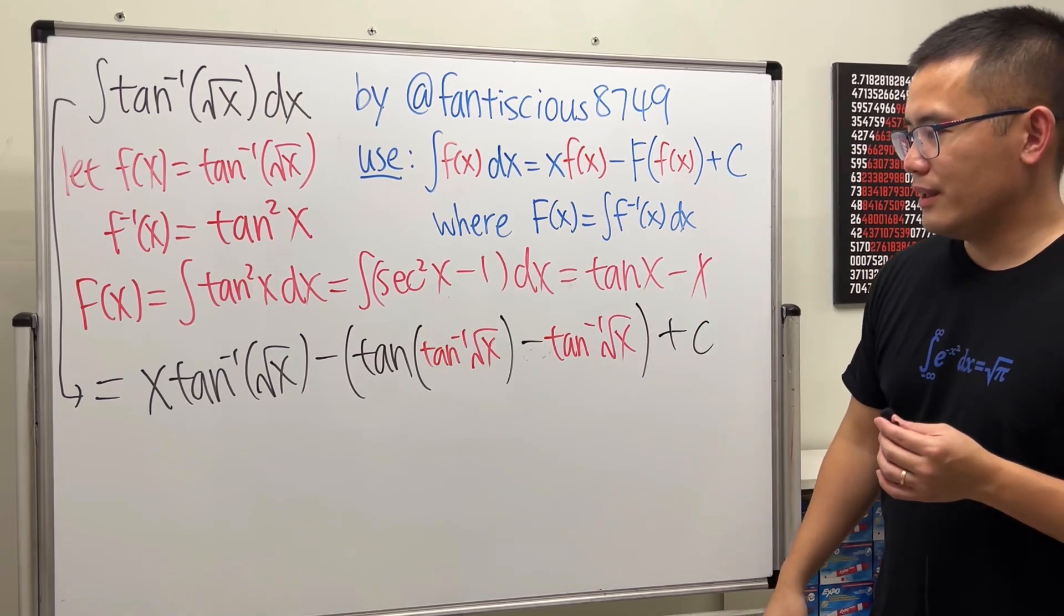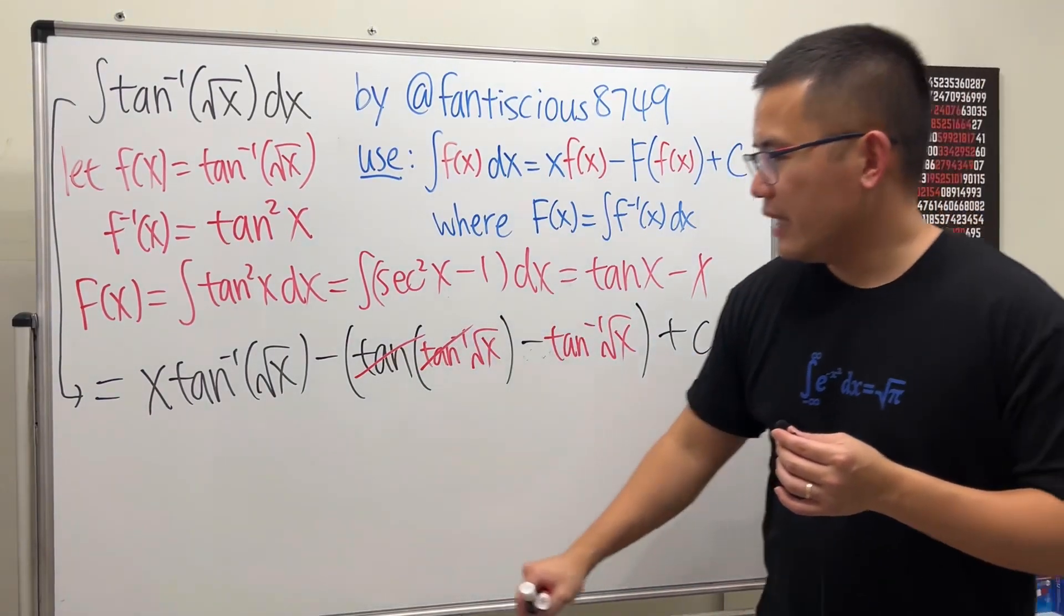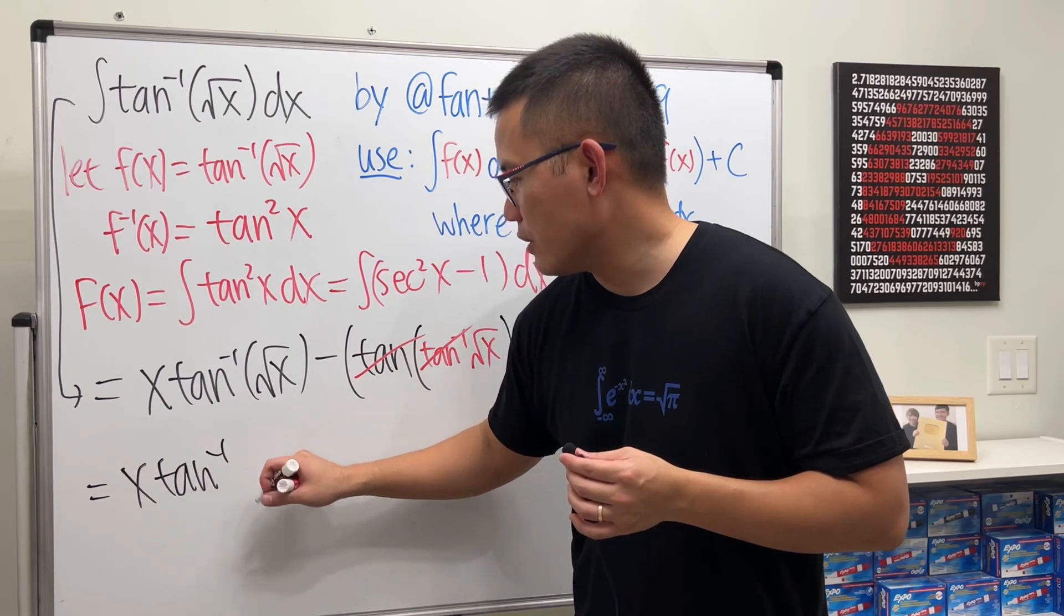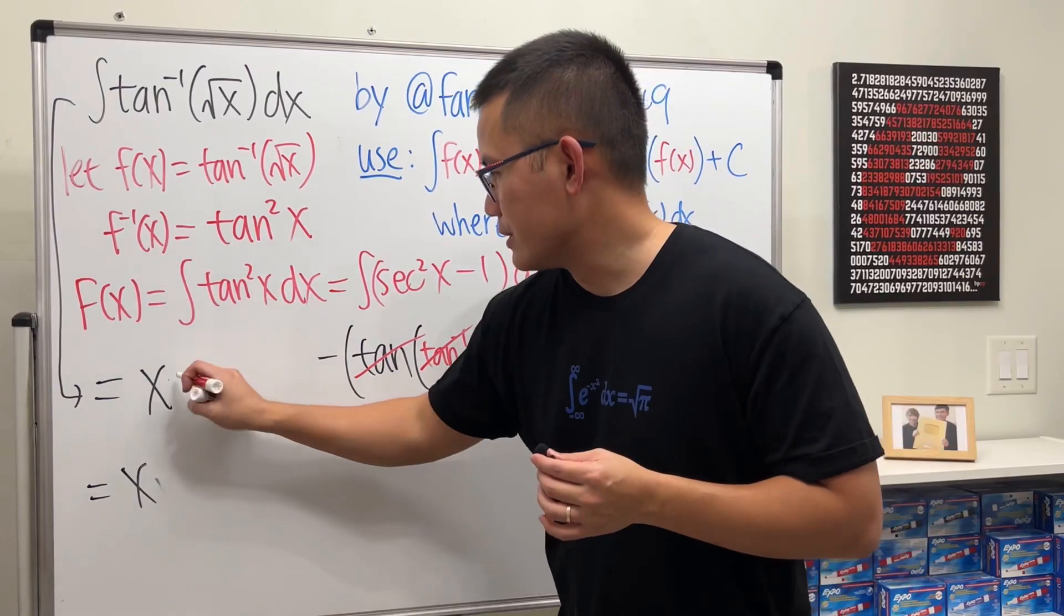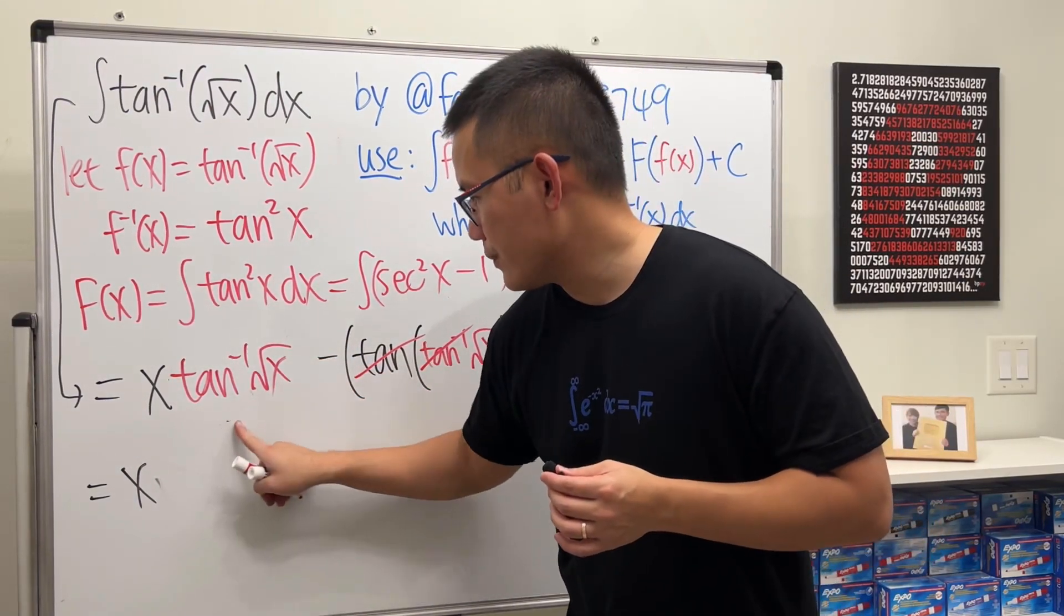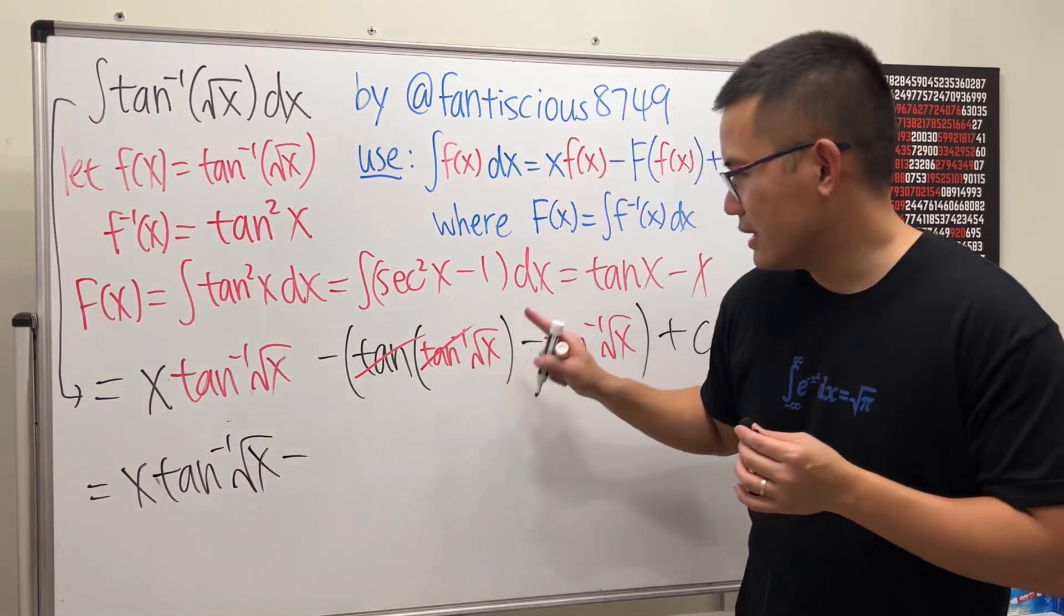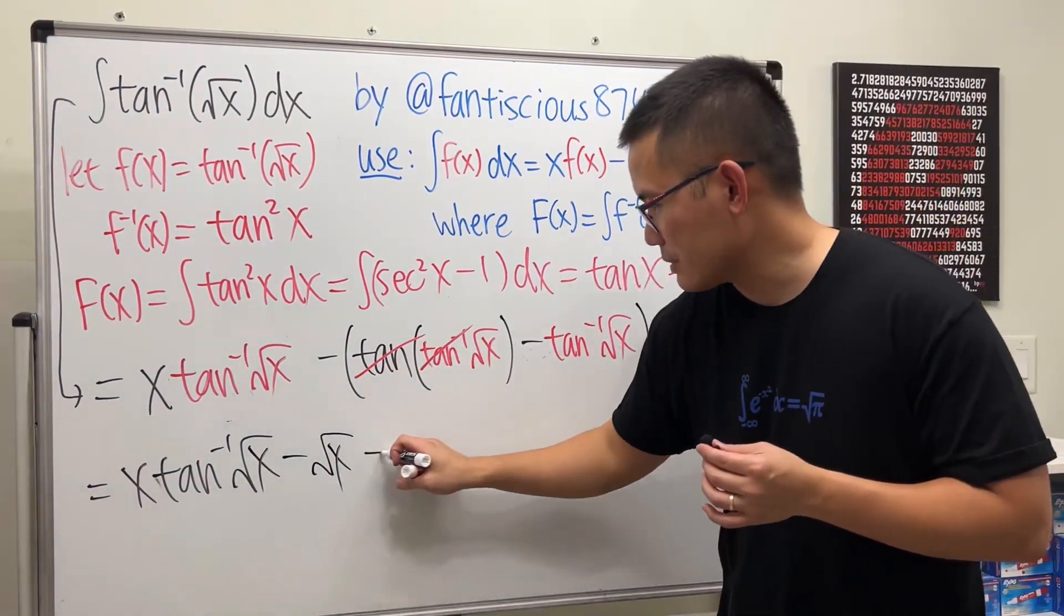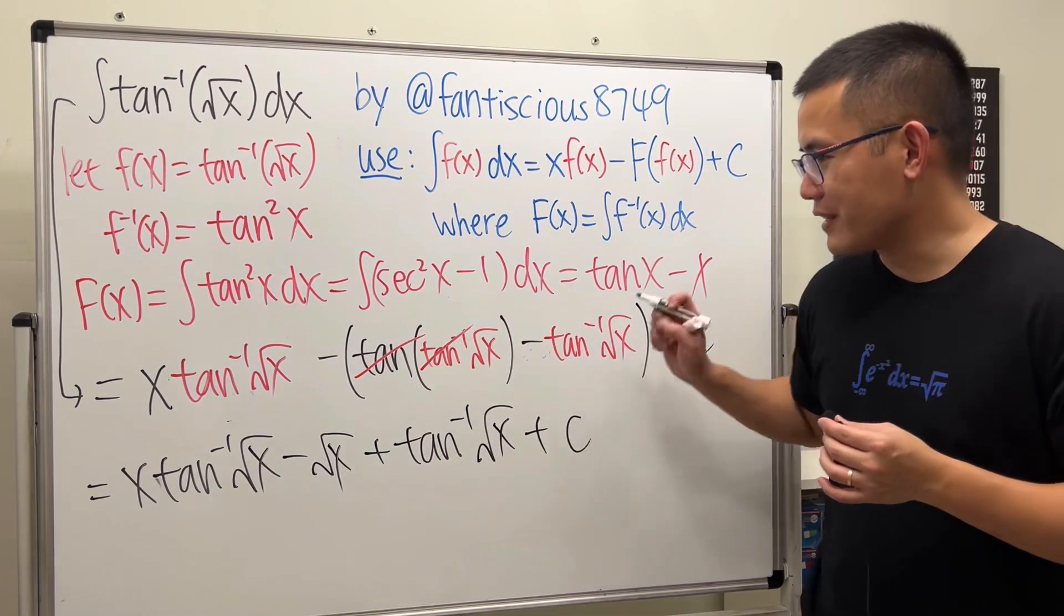That's pretty much done. And of course, we can do better because nicely enough, this and that cancel out. And then, ladies and gentlemen, we have x times inverse tangent of square root of x minus square root of x plus inverse tangent of square root of x. And we are done.